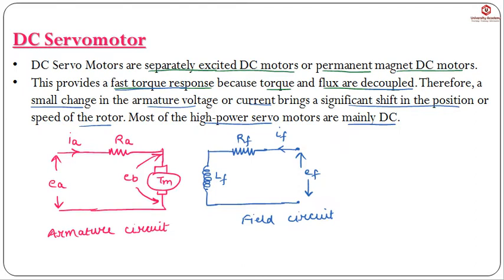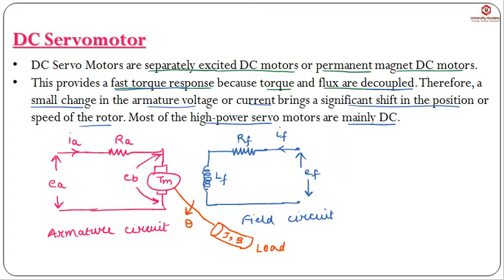This motor drives a rotational load. The load has some inertia and when it rotates it produces some friction. The load rotates at speed theta and is connected to the armature circuit.